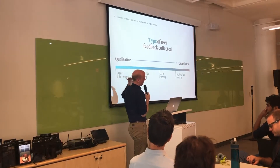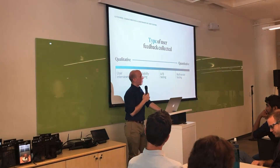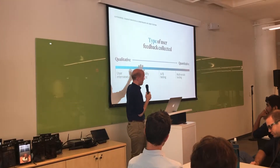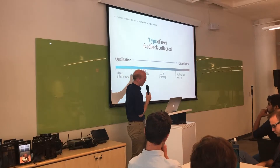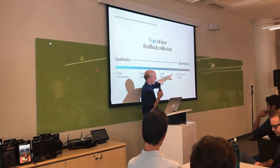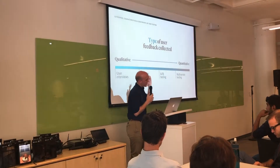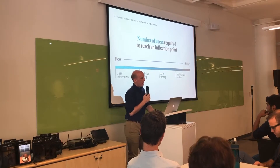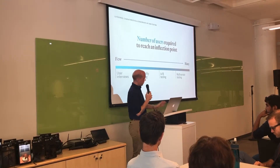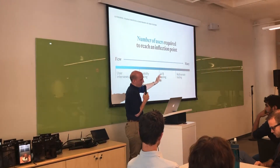On the qualitative side there's more of the ineffable quality of learning versus tangible outcomes. Over on the qualitative side, you may not be able to state exactly what all of these learnings are clearly - whereas on the quantitative side, you can say I learned this specific thing with this specific percent. Next is the number of users required to reach an inflection point. On the qualitative side it's relatively few; over on the quantitative side, relatively many.